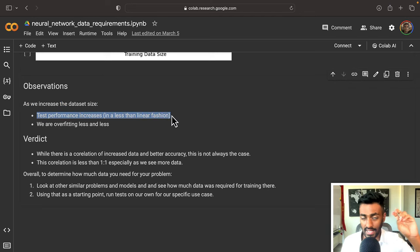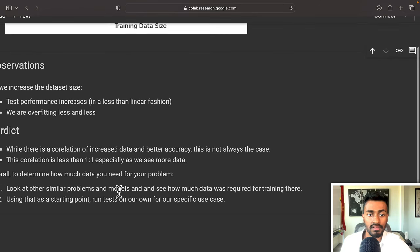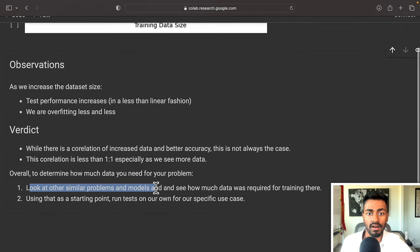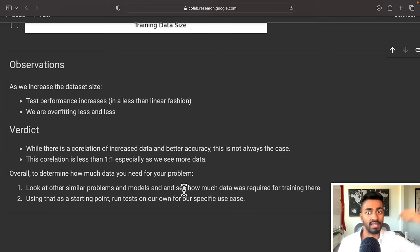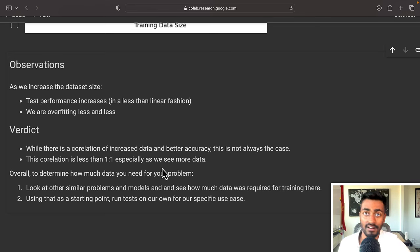And so overall observations is that as we increase the dataset size, the test performance increases in less than a linear fashion, and we are overfitting less and less. And overall, we can say that while there is a correlation of increased data and better accuracy, this is not always the case. This correlation is less than one is to one, especially as we see more and more data. And so to determine how much data you need for your problem, we need to look at other similar problems and models and see how much data they require for training. And using that as a starting point, we can run tests on our own for our specific use case. And so I hope this answers the main question of this video.